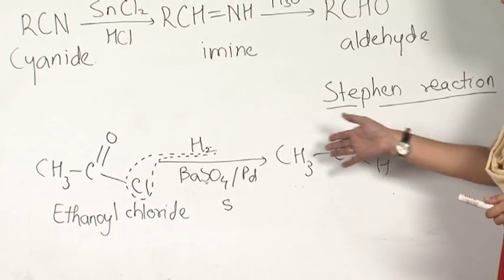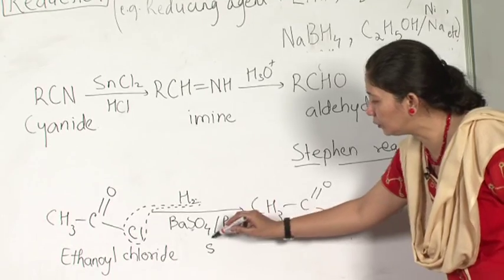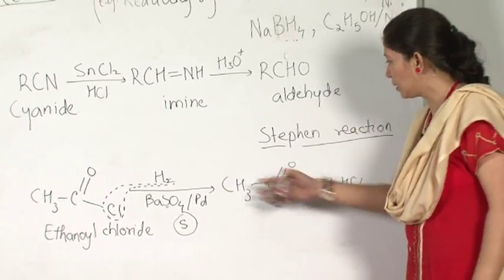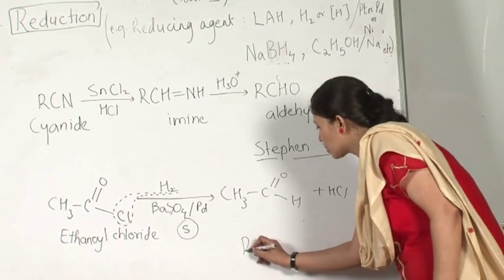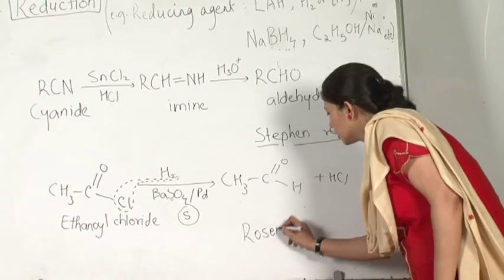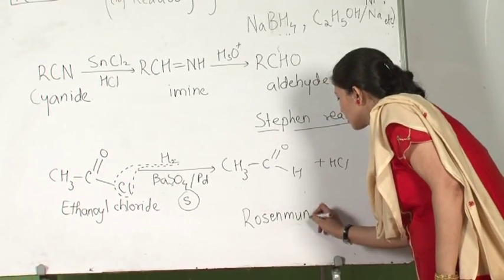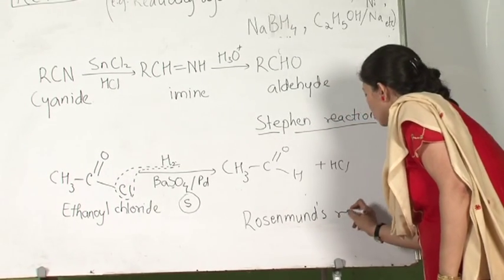What makes the reaction stop? It is the sulphur. This is a naming reaction — it is called Rosenmund's reduction reaction.